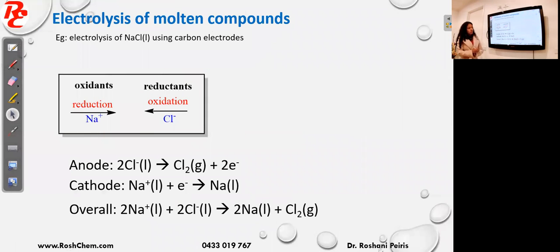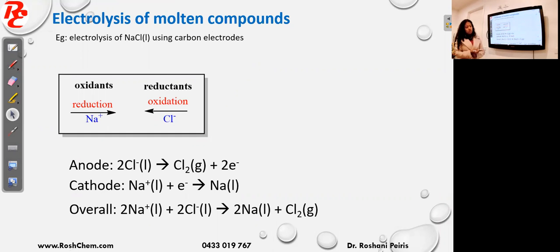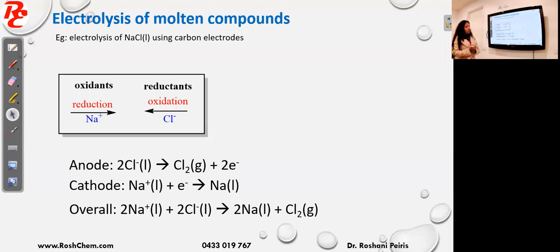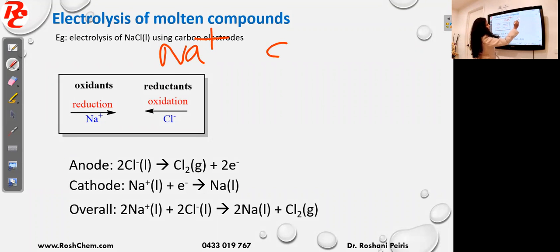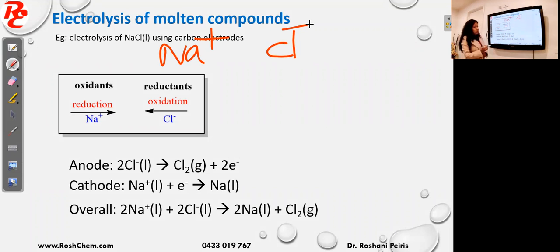Now we will see how to predict the products of electrolysis. The example I took is electrolysis of molten sodium chloride using carbon electrodes. Carbon electrodes are inert which means they don't participate in the reaction. The first thing to do is look at the given compound, it's NaCl. Ionic compounds exist as ions, so you break them into ions: Na⁺ and Cl⁻. NaCl will exist in molten state as Na⁺ and Cl⁻.